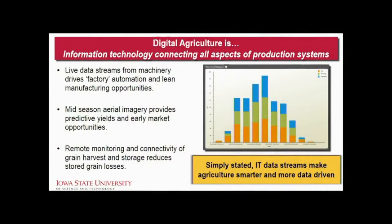Digital agriculture is information technology connecting all aspects of production systems. In ag, one great example is applying factory automation or lean manufacturing to our systems. It takes multiple steps to produce a crop of corn, and in lean manufacturing we measure, define waste, and drive it out of the system — it's all about efficiencies, and that's empowered through data. If you walk through a factory today, there are computer screens next to every robot showing throughput, downtime, uptime, risks, and prognostics. The live data streams we can now tap into in agriculture allow us to start applying this in our areas.